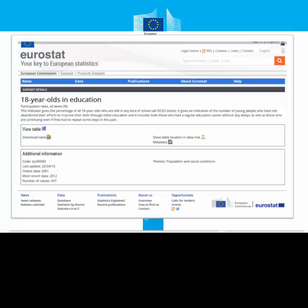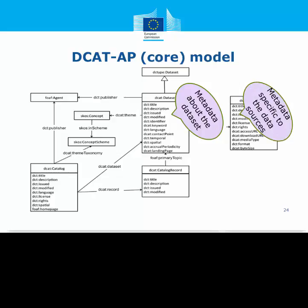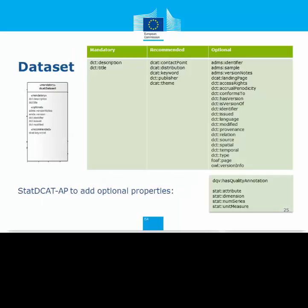Here is some information relating to Eurostat that is discoverable using the EU Data Portal. We are going to concentrate on metadata about the dataset and metadata specific to data sources — that is, the distribution. STAT-DCAT-AP extends DCAT-AP with additional properties added to the dataset and the distribution. For the dataset, five new properties are added, including the link to the data quality information. There are four properties that tell us something about the content of the dataset in terms of scope, such as what dimensions classify the data — age, sex, country, education level, industry, etc.